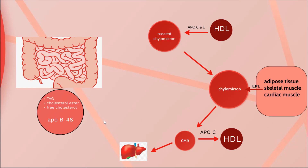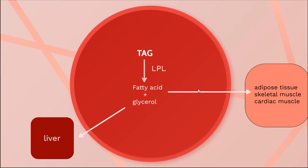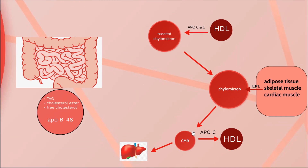Let's recapitulate the process. The nascent chylomicron is secreted into the circulation from the intestine, then it becomes matured by receiving APO C and APO E from HDL. APO C2 activates lipoprotein lipase, which degrades triacylglycerol into fatty acids and glycerol. Fatty acids go into the cell and glycerol goes into the liver.